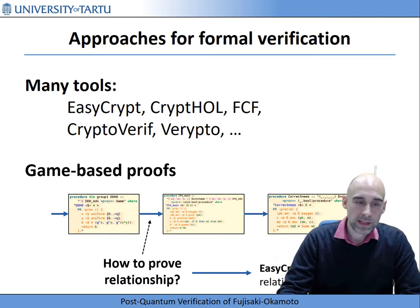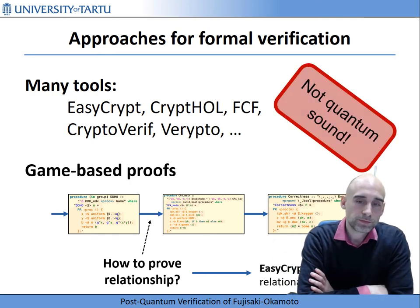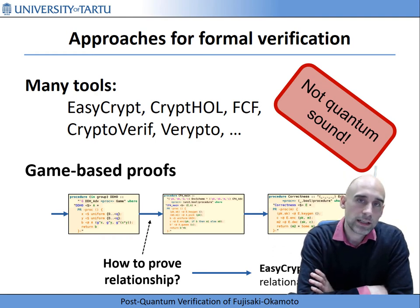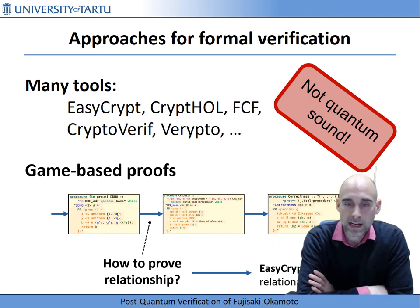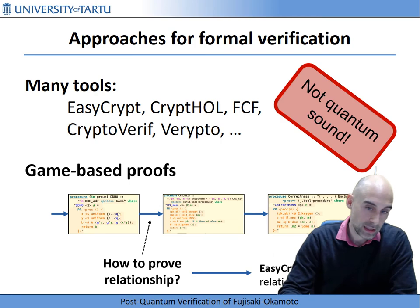The problem with all these existing approaches, however, is that they are not quantum sound. All the soundness of these approaches is proven in the classical model — adversaries are classical and so on. A priori there is no guarantee that anything proven with these tools has any impact in the quantum setting. In fact, in prior work we showed that for EasyCrypt we could give an explicit example of a multi-prover-like situation where EasyCrypt would claim security but there is no security in the quantum setting.